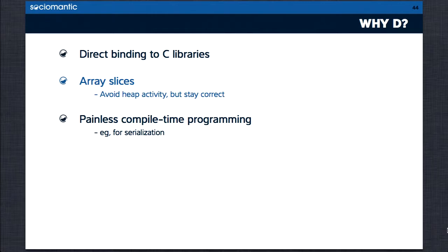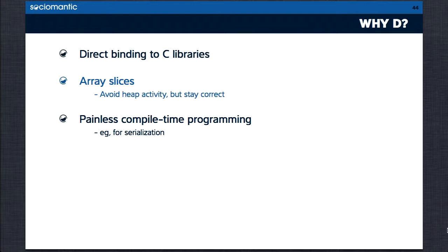These three reasons are the core of why Sociomantic uses D, and also part of why any organisation would choose D. All three were part of the original design goals. Binary compatibility with C was there from the beginning. Array slices were in the first compiler release — in my opinion, array slices are the big idea of D, shaping the language in so many ways. And D is metaprogramming. It was planned from the beginning to be the perfect language for metaprogramming, starting with its powerful template system — D would overtake C++ as the best language for cool compile-time tricks.